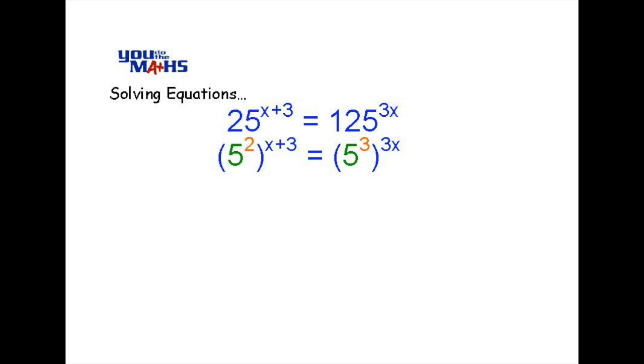So what we need to do is rewrite those values with a base of 5. And we'll do that. We'll put it in brackets. 25 is 5 squared and 125 is 5 cubed. We need to put it in brackets because the whole power has to be multiplied out according to the index law.